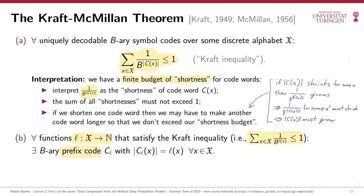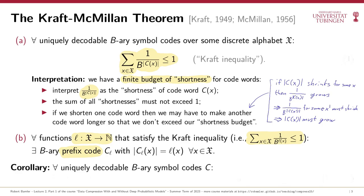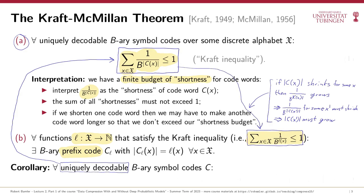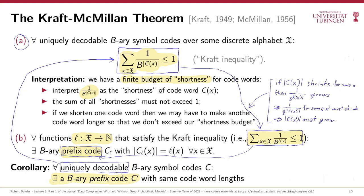Before proving Parts A and B, I want to highlight a simple corollary that follows when we combine them. Every prefix code is uniquely decodable, and while the inverse is not generally true, we can conclude something almost as good: if you start from any uniquely decodable b-ary symbol code C, then by Part A its codeword lengths satisfy the Kraft inequality. Therefore, by Part B you can create a prefix code with the same codeword lengths. This means there is no reason to ever use a uniquely decodable symbol code that is not a prefix code, because prefix codes allow decoding with a simple greedy algorithm.